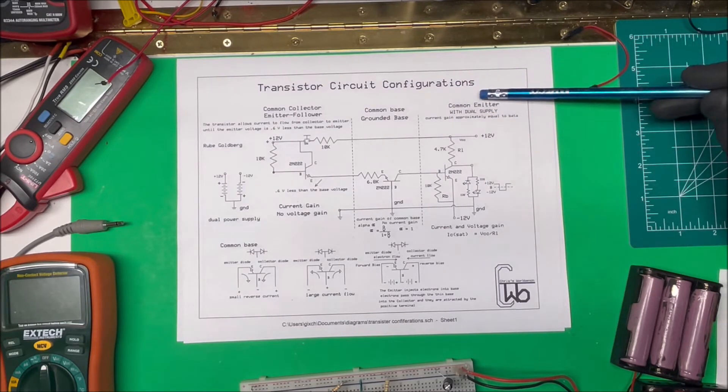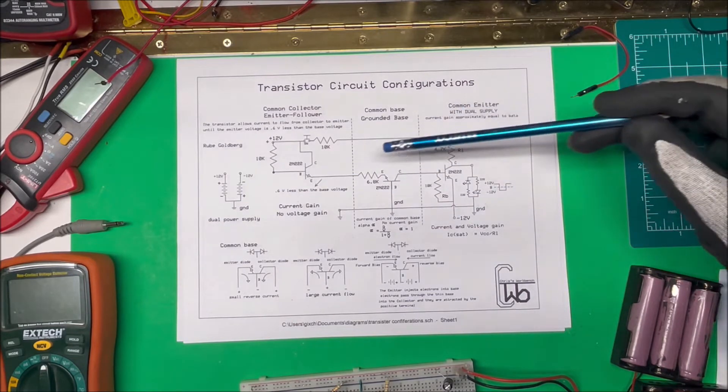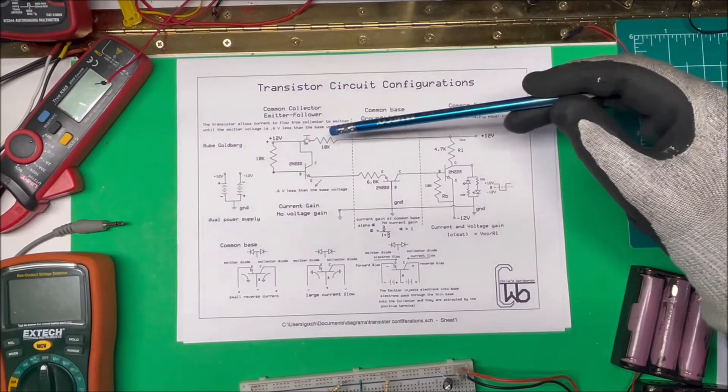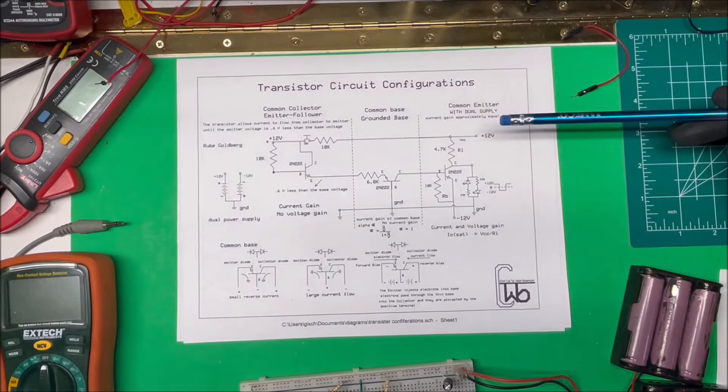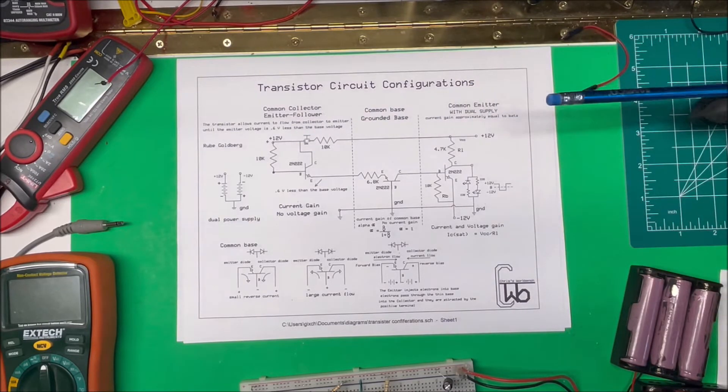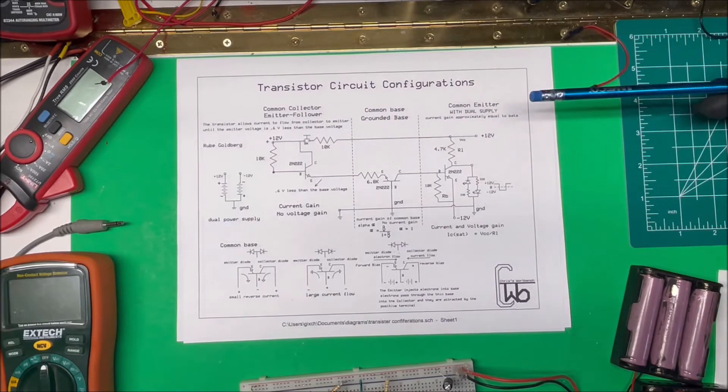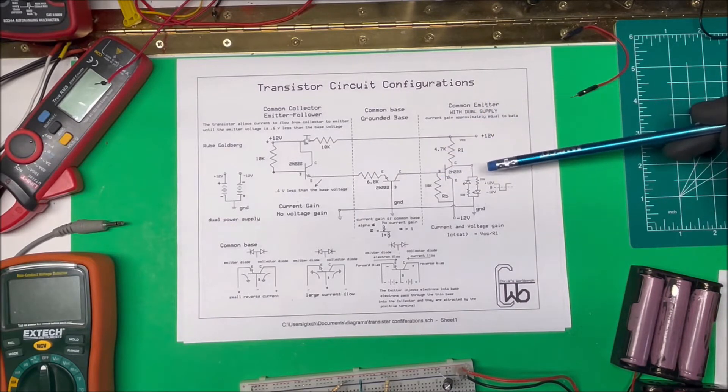There's basically three types: common collector, common base, and common emitter. So I thought I'd try to put them all together in one circuit, use three transistors, and use each way to bias a transistor and see if I could make something work out of that.